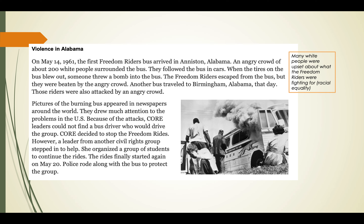Because of the attacks, CORE leaders couldn't find a bus driver willing to drive the group, so CORE decided to stop the Freedom Rides. However, a leader from another civil rights group stepped in to help. She organized a group of students to continue the rides, which started again on May 20th. Police rode along with the bus to protect the group. Even though they were experiencing violence, this was just a setback - they still wanted to continue fighting for racial equality. My main idea: various groups of people stepped in to help even though freedom riders were experiencing violence.